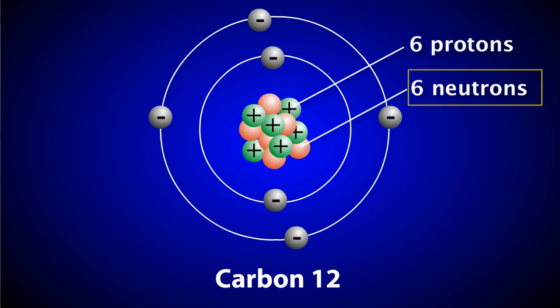However, the number of neutrons can vary between individual carbon atoms. These variations are called isotopes. Isotopes are atoms of the same element that differ only in the number of neutrons present in the nucleus.